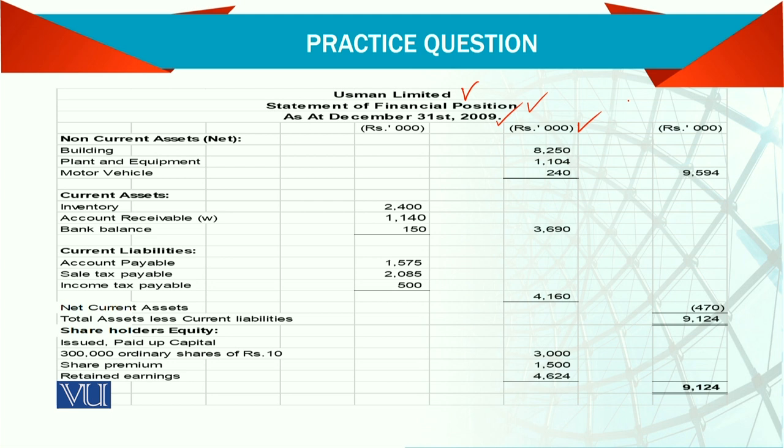Now we have non-current assets. There is a note to it. In the note we have a building, plant and equipment, and a motor vehicle. Here we are taking the net after taking out the accumulated depreciation. Why? Because we have already given a schedule of non-current assets. If it were not there, we would report cost minus accumulated depreciation for all three assets. But since the schedule is there, we are not reporting it as cost less accumulated depreciation.